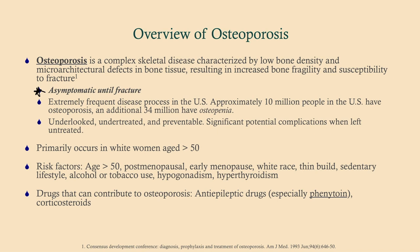There may be subclinical fractures of the thoracic spine which lead to kyphosis — that hunchback appearance — but generally this is asymptomatic until fracture, which can lead to problems on test questions. About 10 million people in the U.S. have osteoporosis and about 34 million additional people have osteopenia.